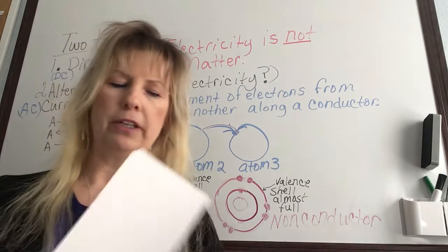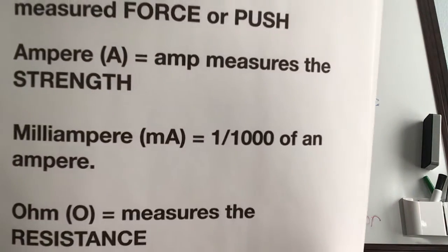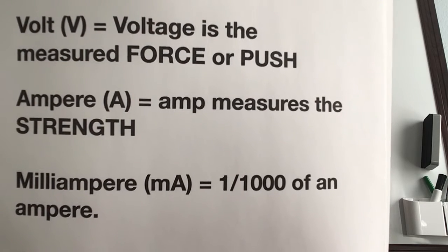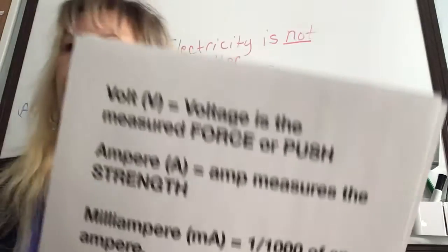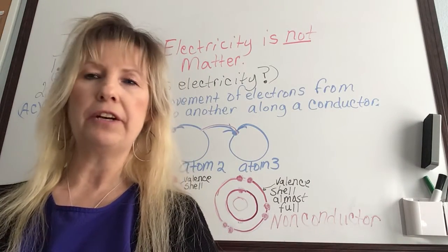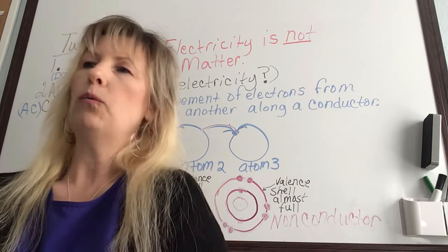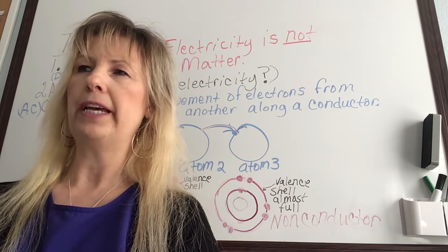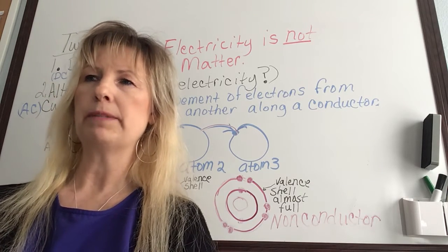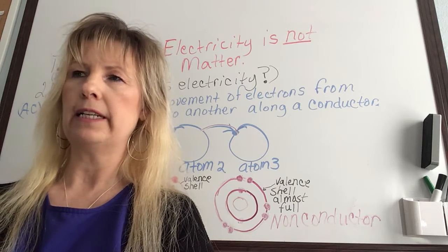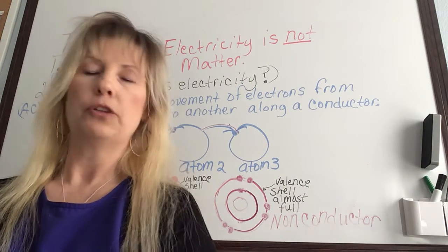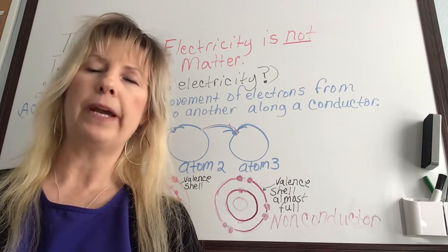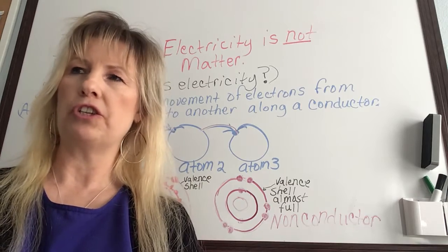An ampere, abbreviated A and also known as amps, is the unit that measures the strength of an electric current. Just as a hose has to be large enough to carry the amount of water flowing through it, a wire has to be large enough to carry the amount of electricity — the amps — flowing through it. A hair dryer rated at 12 amps has to have a cord twice as thick as one rated at 6 amps; otherwise your cord would overheat and you'd start a fire. The higher the amp rating, the greater the number of electrons and the much stronger the current.